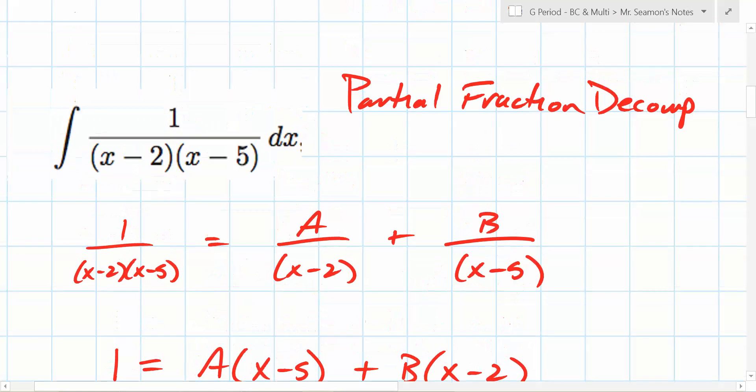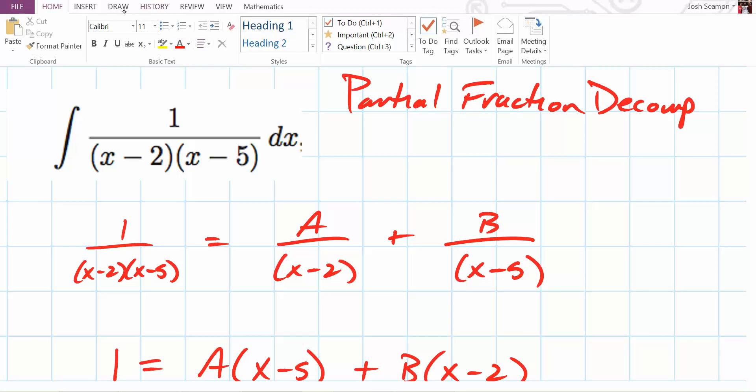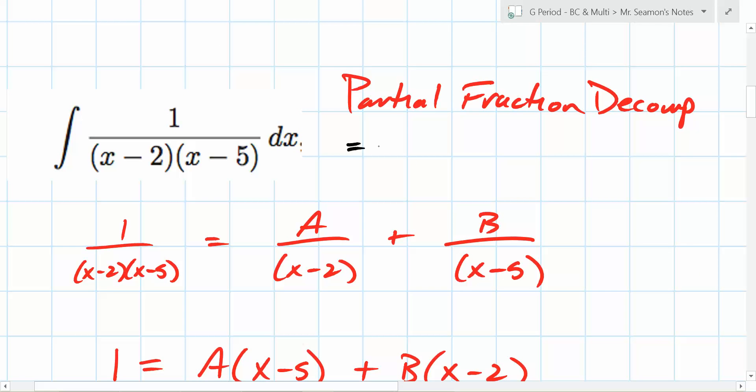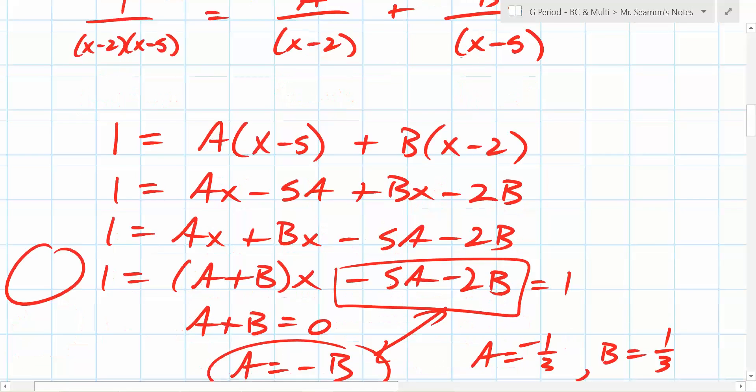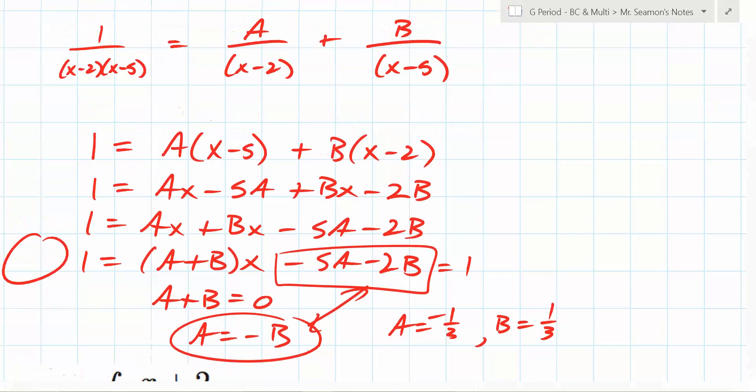So now once you have that, can you rewrite this nicely? You end up with the integral of negative 1 over 3(x minus 2) plus 1 over 3(x minus 5) dx. Now, is that something you can integrate? Yes. You absolutely can integrate that.